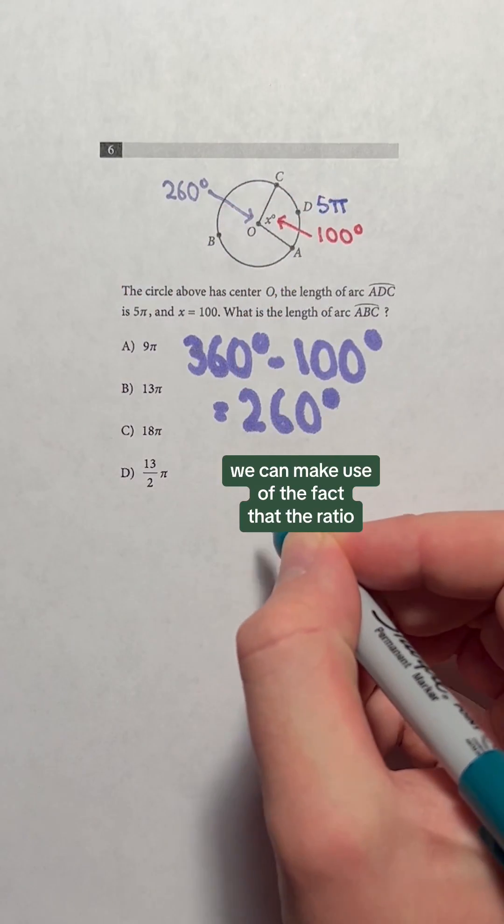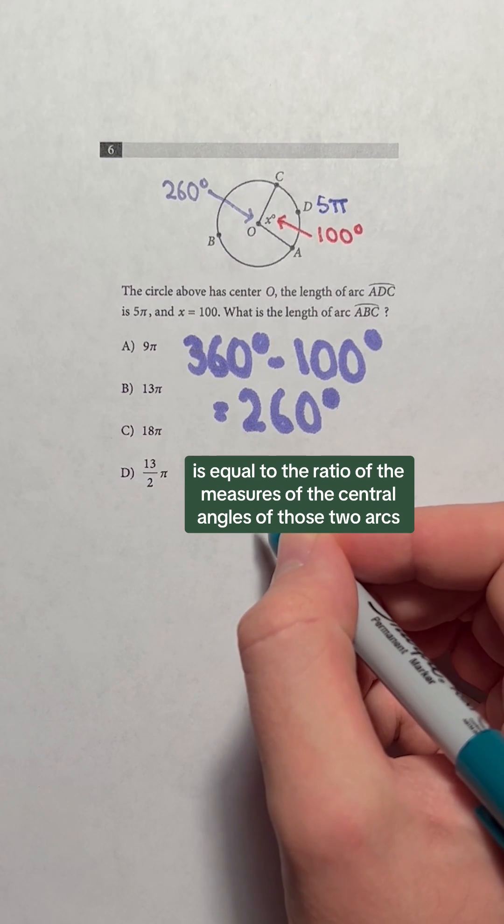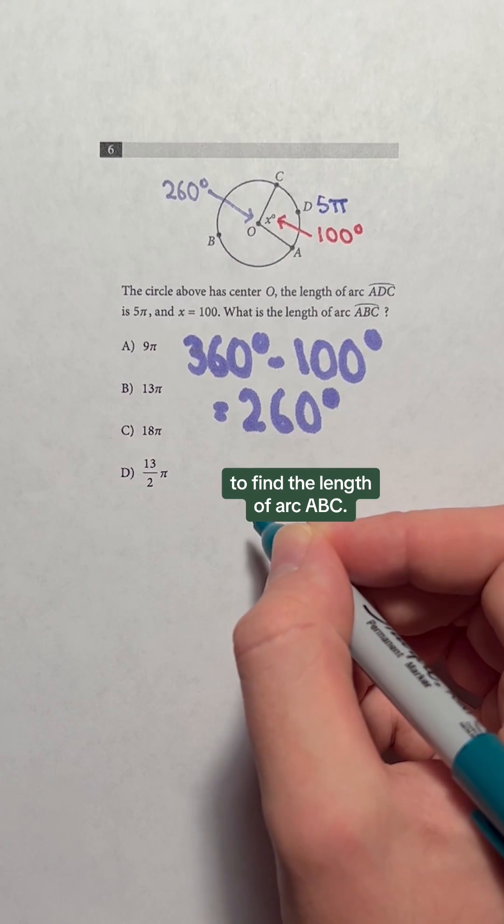With this information, we can make use of the fact that the ratio of the lengths of two arcs of a circle is equal to the ratio of the measures of the central angles of those two arcs to find the length of arc ABC.